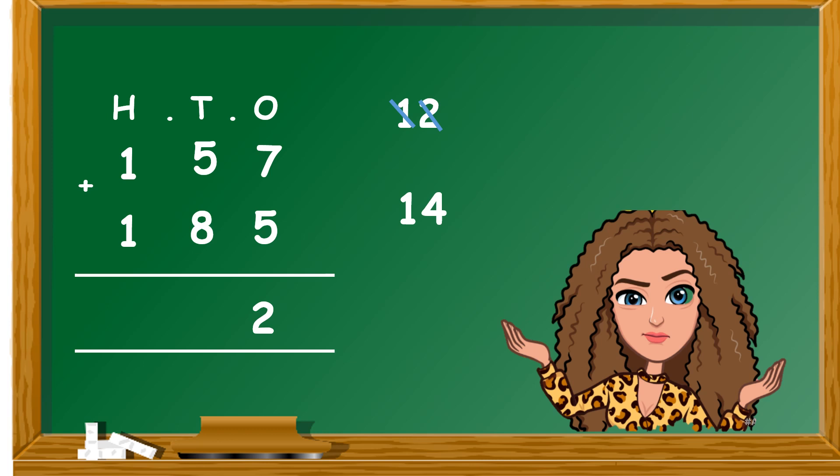What do we do with the 14? We take the 4 and we put it in the tens column. Then, we add our hundreds. 1 added to 1 makes 2. And then, we add the 1 from outside. 2 add 1 is 3.